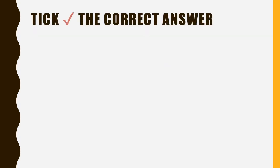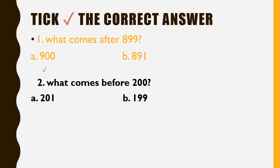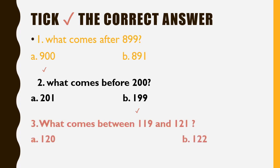Pick the correct answer. What comes after 899? Yes, option A: 900. Next question: what comes before 200? Yes, 199. Question 3: what comes between 119 and 121? Yes, 120.